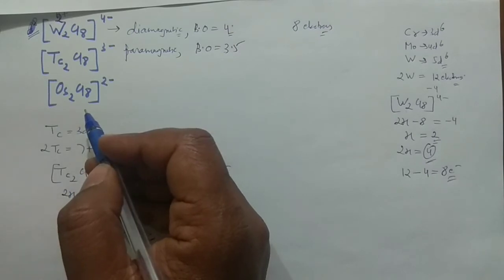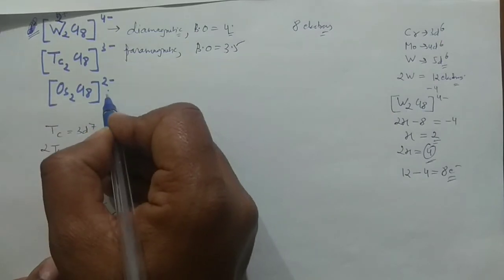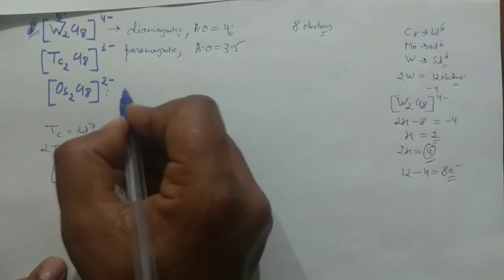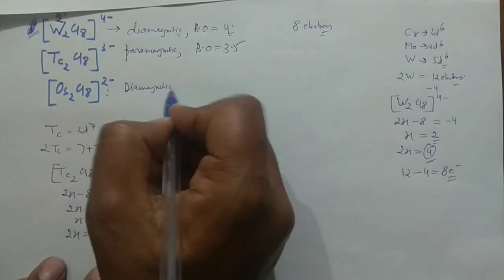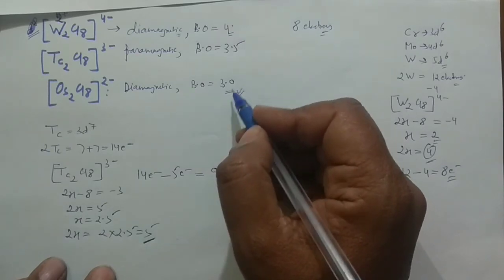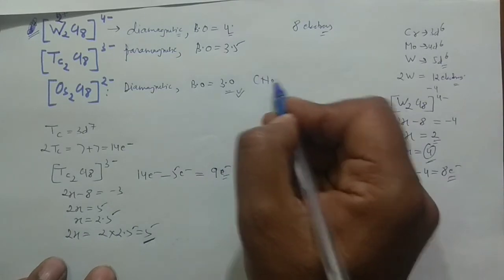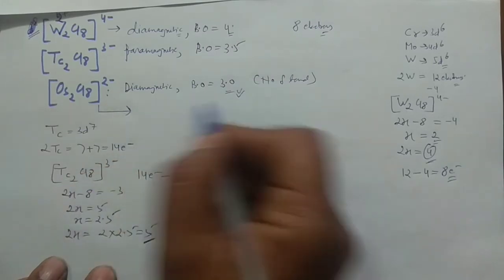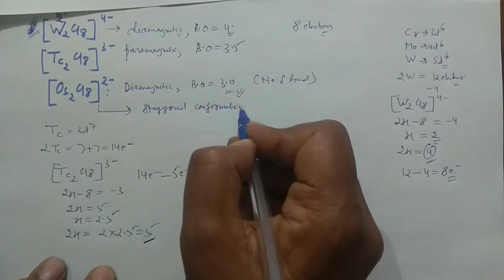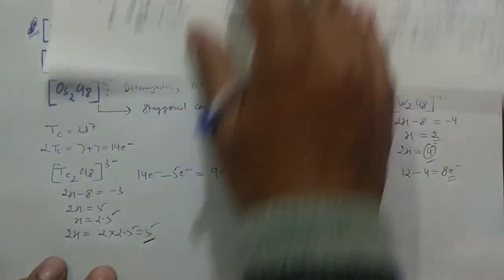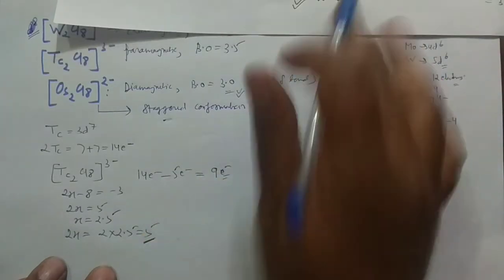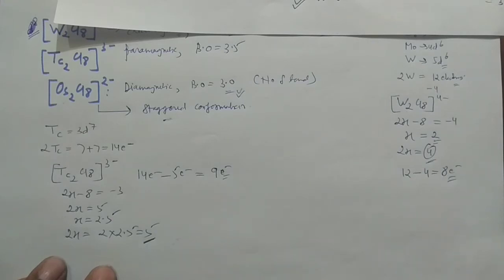For Os₂Cl₈²⁻, the answer directly: there are 10 electrons. Filling the MO diagram, all are paired, so it is diamagnetic. Bond order = ½(8 − 2) = 3.0. When the bond order is 3, there is no delta bond formed. Without a delta bond, there is no preference for eclipsed conformation, so this complex adopts the staggered conformation — unlike the rhenium complex.